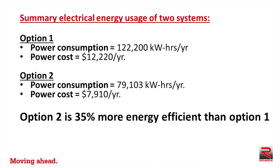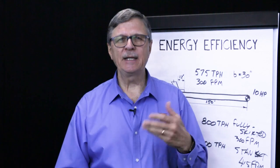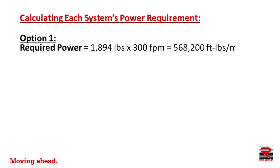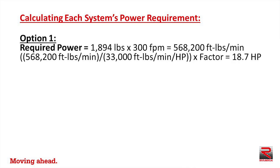Let's explore how to calculate these differences. Option one's required power equals a belt pull of 1,894 pounds times a belt speed of 300 feet per minute, giving a power requirement of 568,200 foot pounds per minute. We divide that by 33,000 foot pounds per minute per horsepower, apply a factor, and determine that the required power equals 18.7 horsepower.